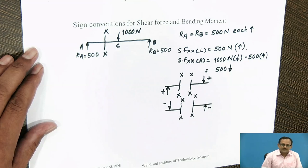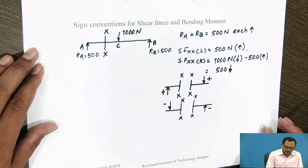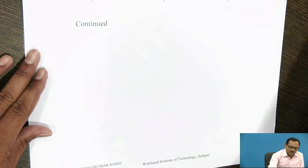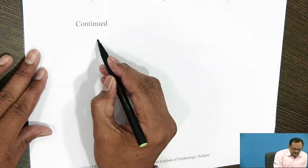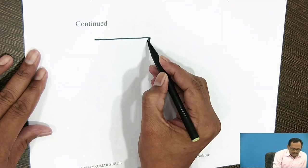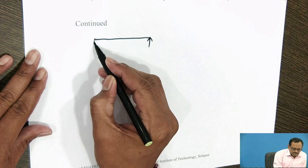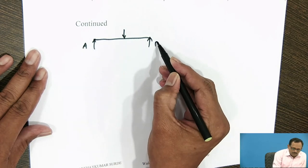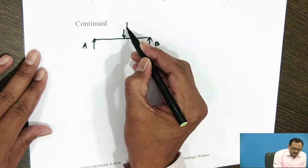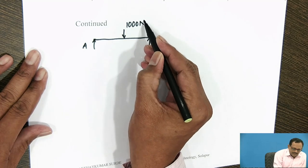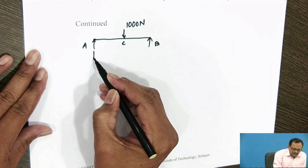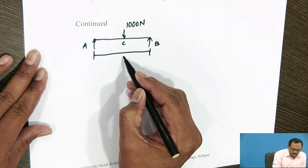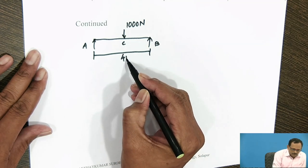Now, we will consider the bending moment. For calculating the bending moment, consider a simply supported beam AB that carries a point load of 1000 N at its mid and the total span of the beam is 4 m.